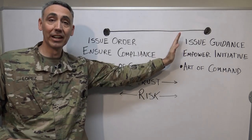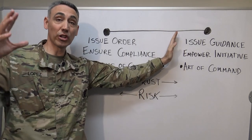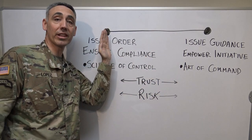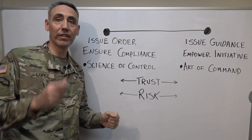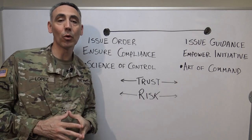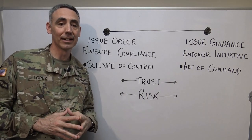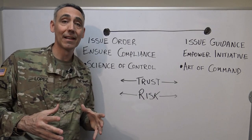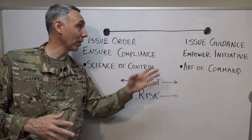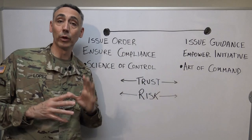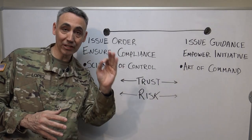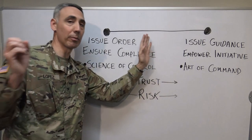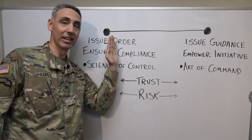Number two: you cannot overreact when something goes wrong. If you're operating on the empowerment side and something goes wrong and you overreact and crush somebody, the whole organization is going to move to the compliance side and only move when given an order — that is not what we want. Number three: as leaders we have to prioritize. Everything cannot be important.